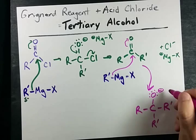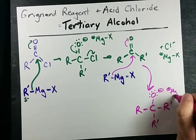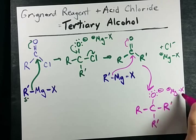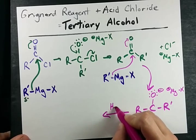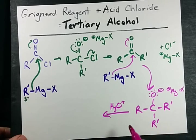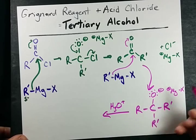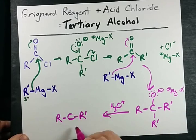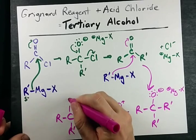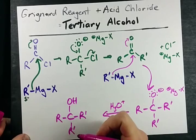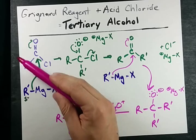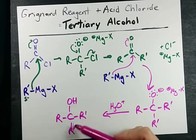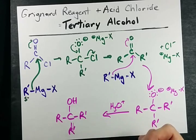It is again mitigated by another MgX complex, but again lots of teachers and textbooks omit that in the mechanism. What really matters is that in the end, when you mix it with aqueous acid, you're going to protonate that O⁻ and you're left with a carbon connected to three groups — that makes it tertiary — with an OH group which makes it an alcohol. We've turned the acid chloride with the R chain into a tertiary alcohol with two R' chains also attached to it.